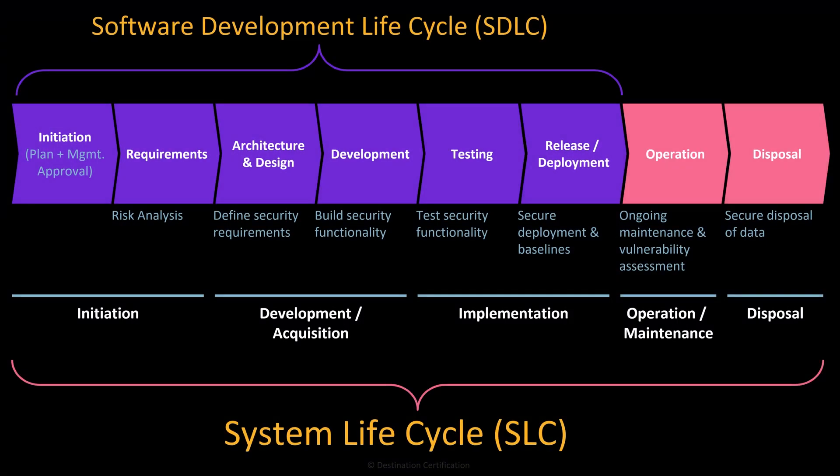There's one more piece I'll layer onto this. You can see with this diagram here the SDLC steps I've just walked you through: initiation, requirements, architecture and design, development, testing, and release deployment — the purple boxes. And in a moment, I'll walk you through the two pink boxes, operation and disposal, that round out the system lifecycle, the SLC.